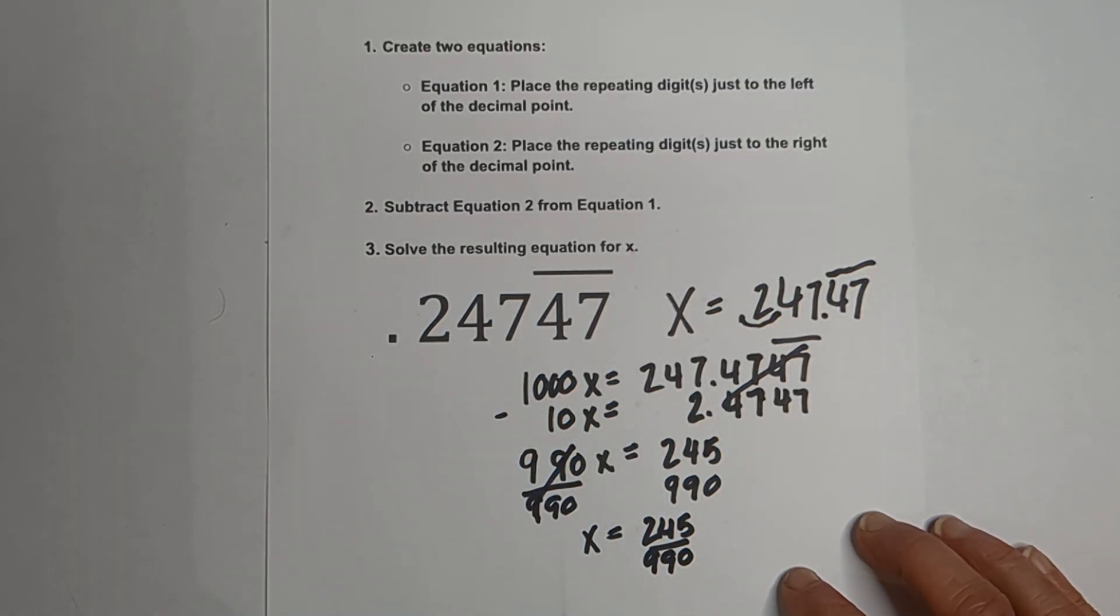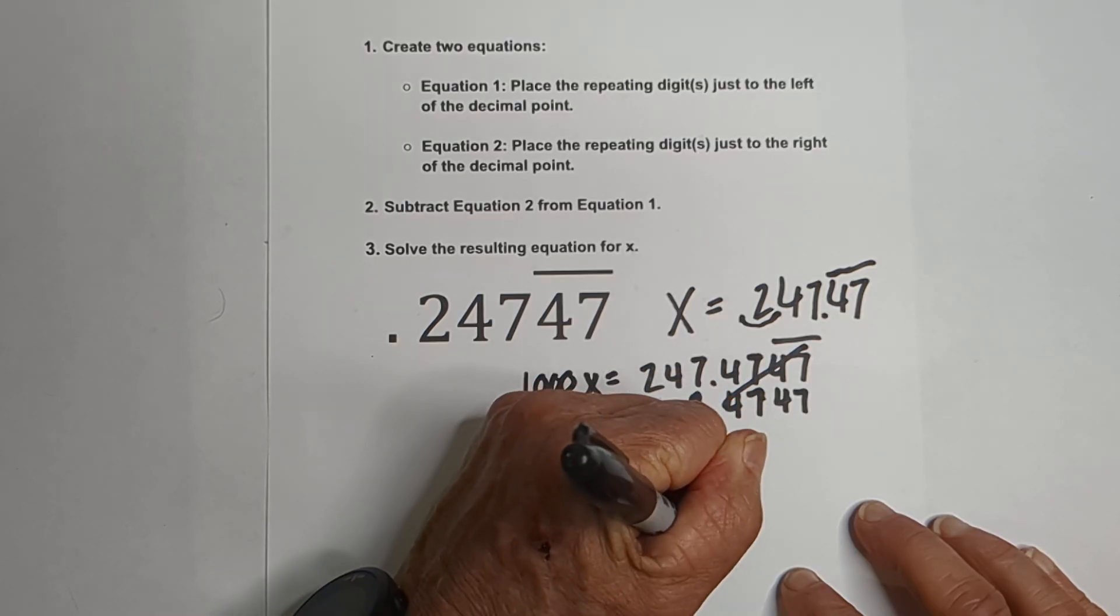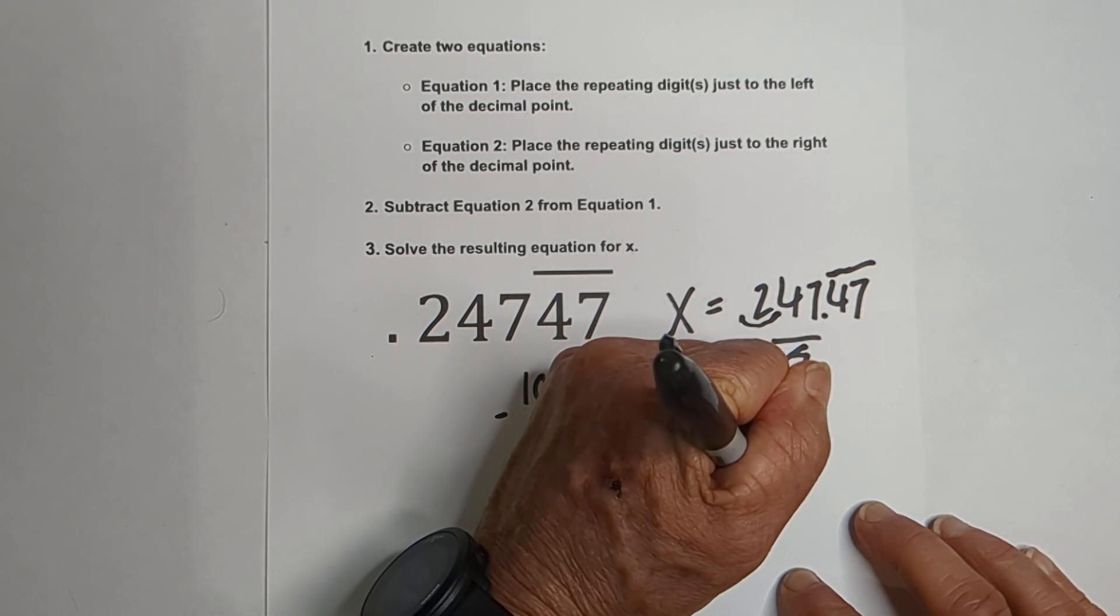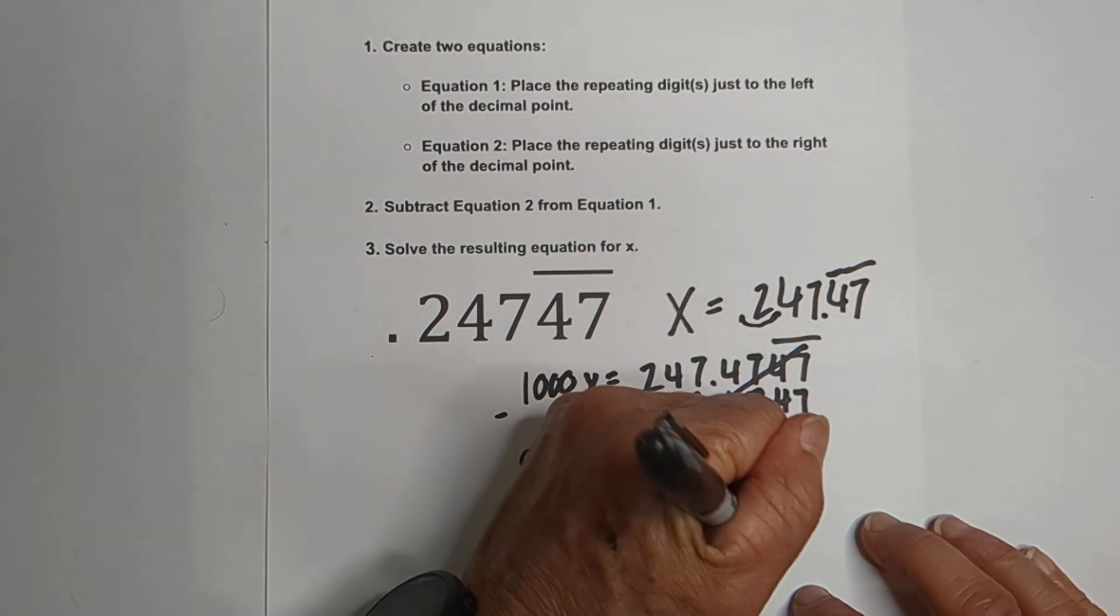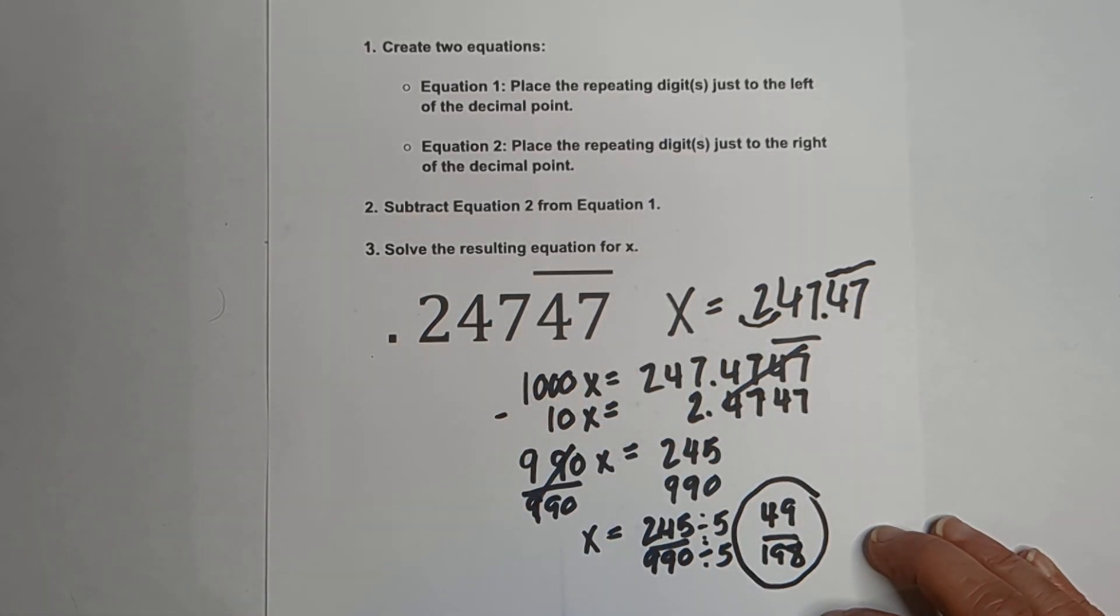Now, can we simplify? Yes, we can simplify. They're both divisible by 5. Okay, 245 divided by 5 is 49, and 990 divided by 5 is 198, and you cannot simplify further.